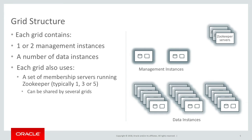At a high level, every grid will contain a set of management instances — either one or two, with two being preferred for production use — and some number of data instances, which can scale anywhere from 1 to 64 in the 18.1 release. Each grid will use a set of membership servers running ZooKeeper, and for high availability reasons, that's usually going to be one, three, or five. Those ZooKeeper servers can be shared by several grids — they don't have to be dedicated for each grid.